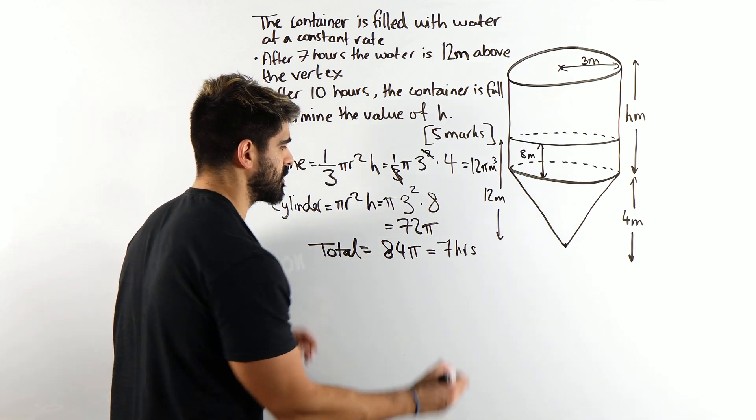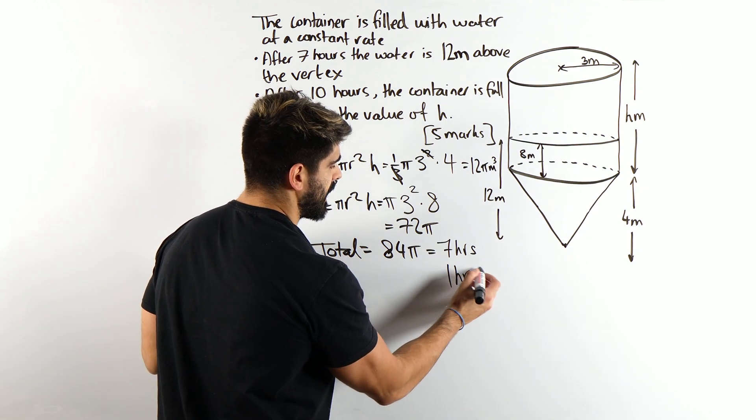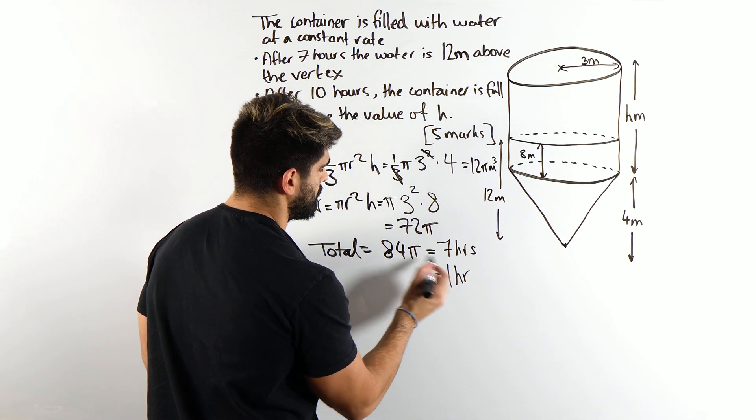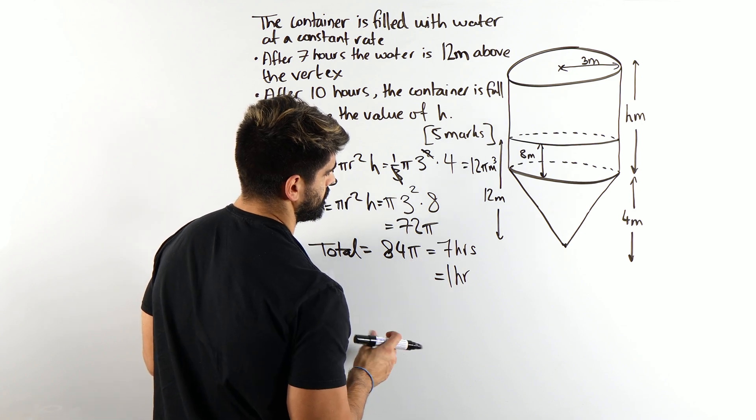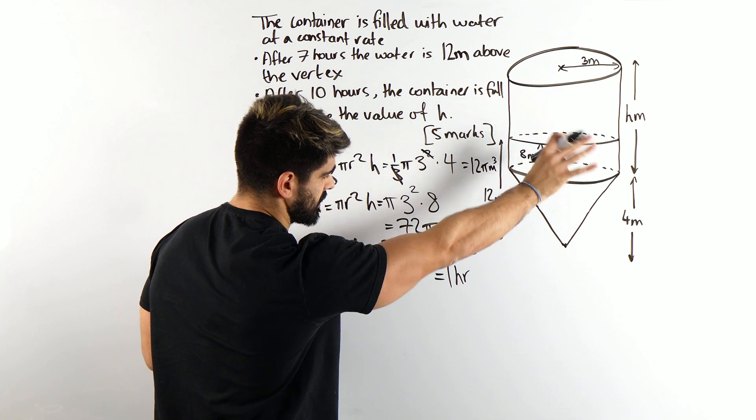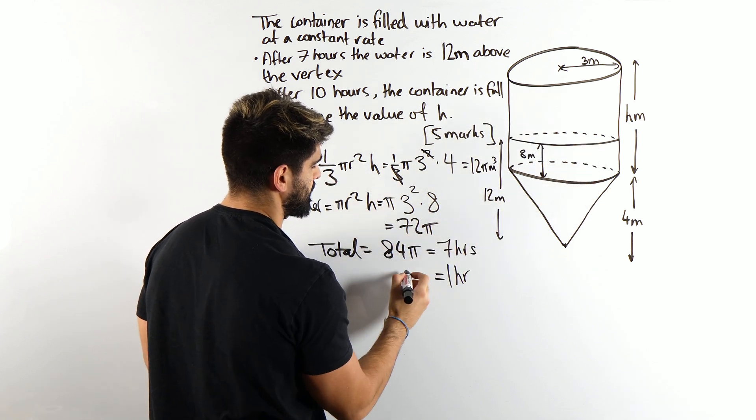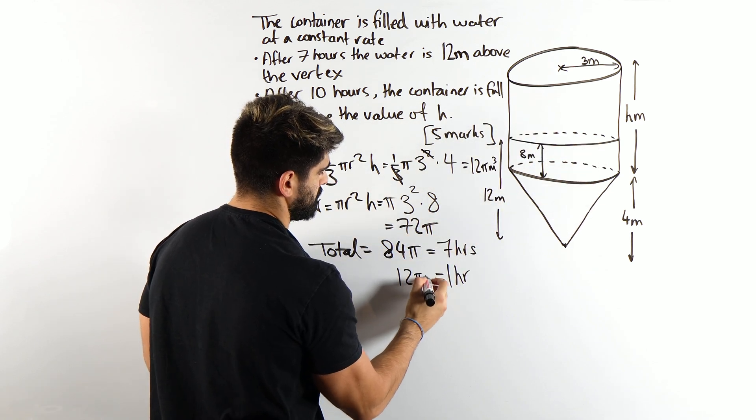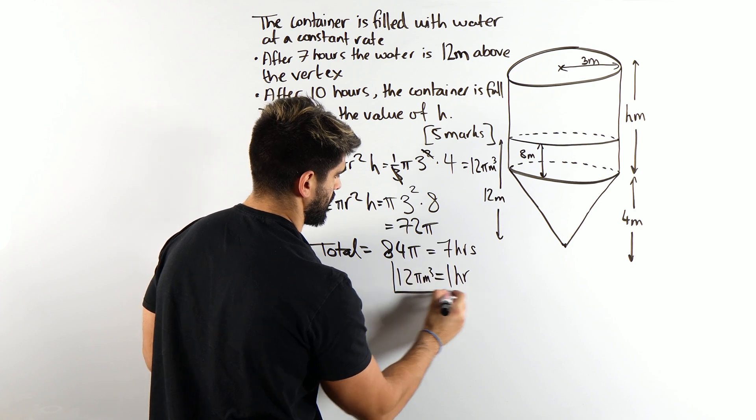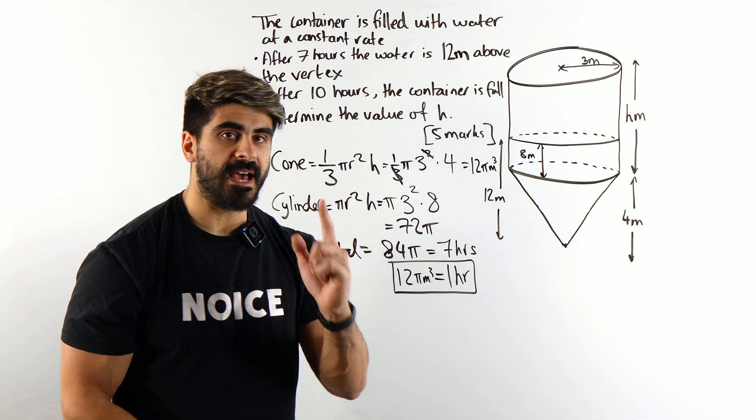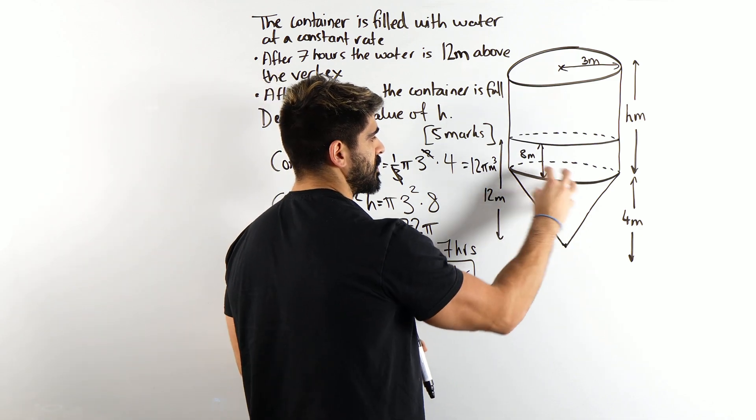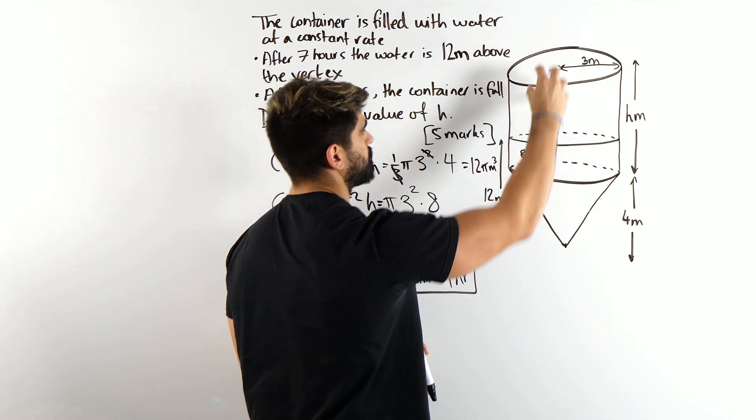So one hour is the more important thing. For every hour, we are filling up the container divided by seven, which is 12 pi meters cubed. So for every one hour, 12 pi meters cubed is filling up.